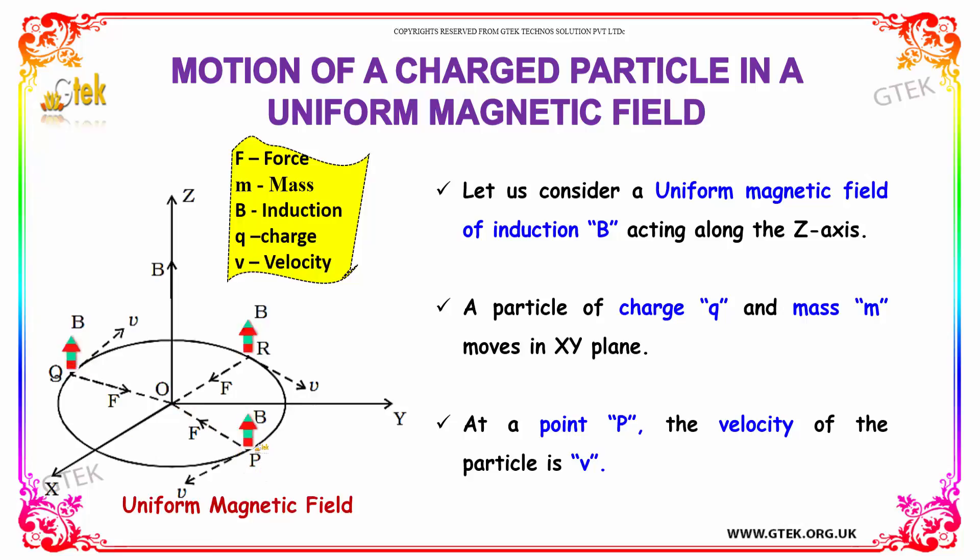At a point P, the velocity of the particle is V. So the particle is here, it's moving here, it's in Q position, it's in R position with the velocity V.